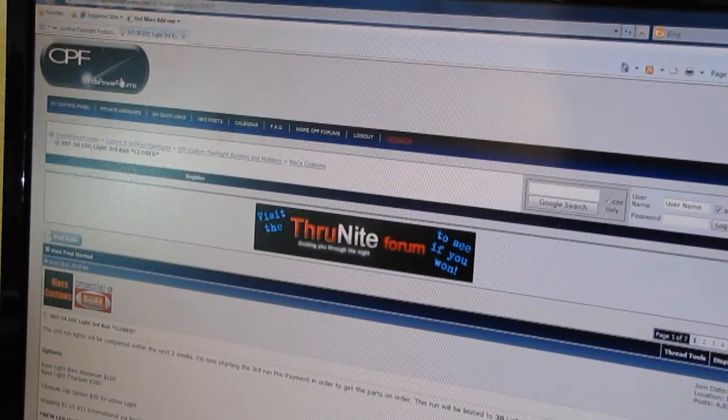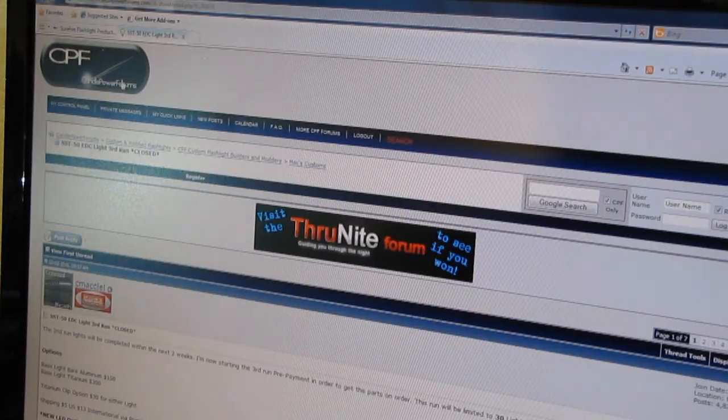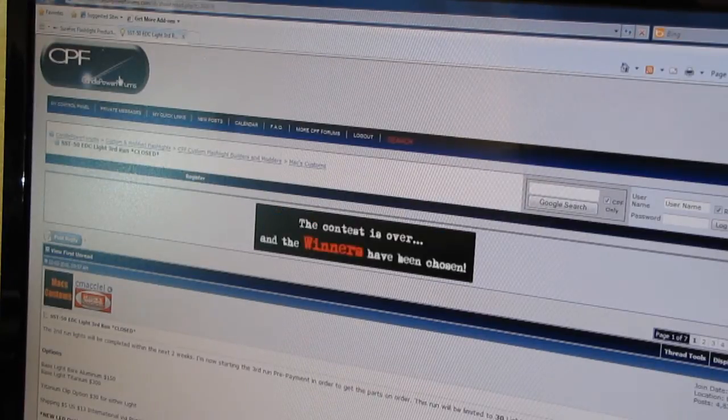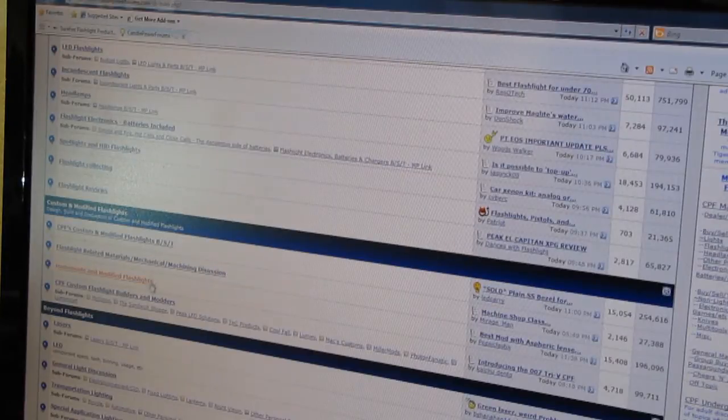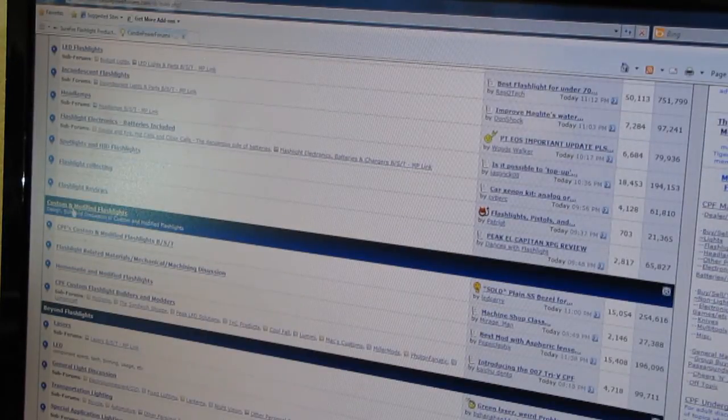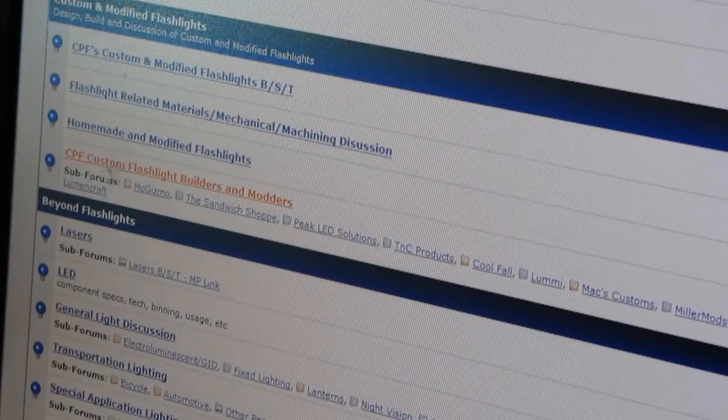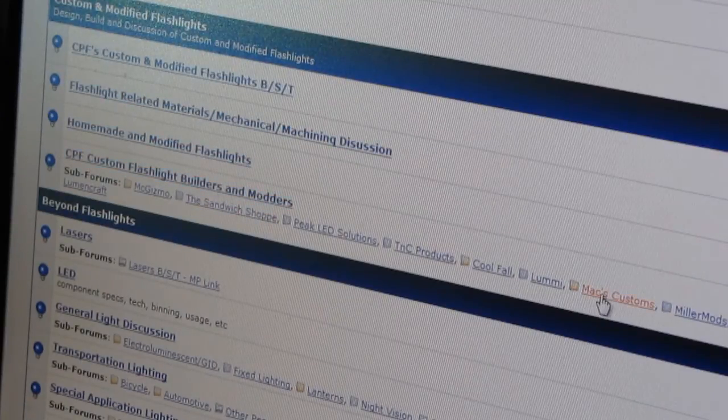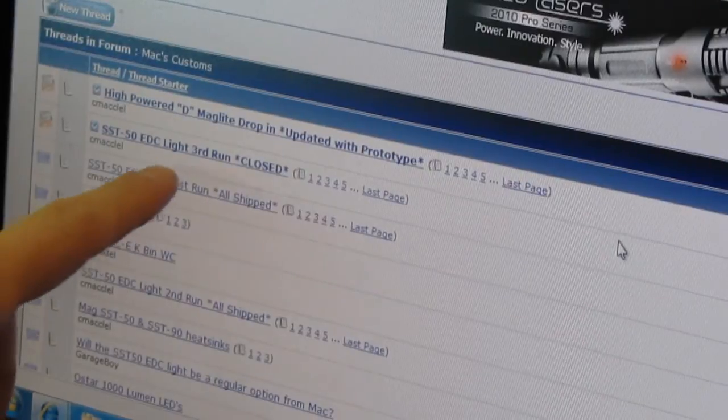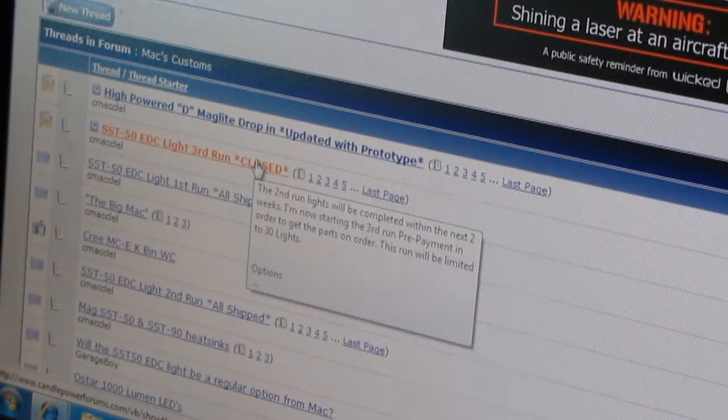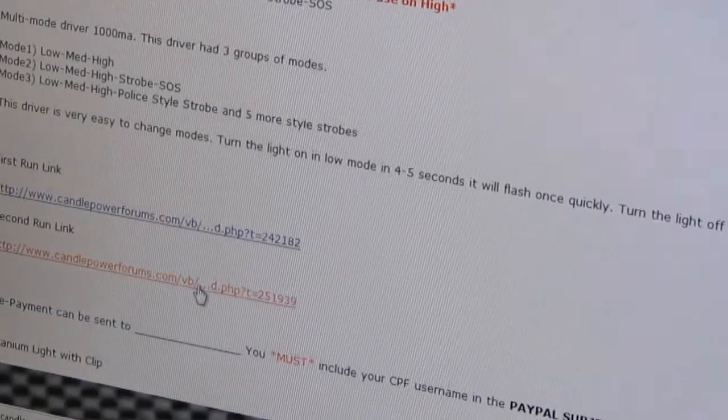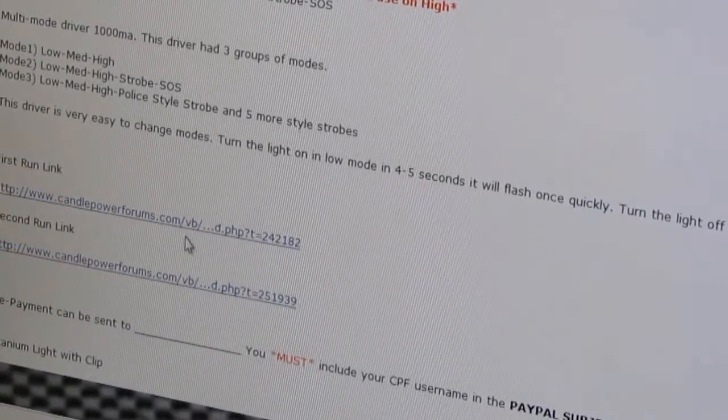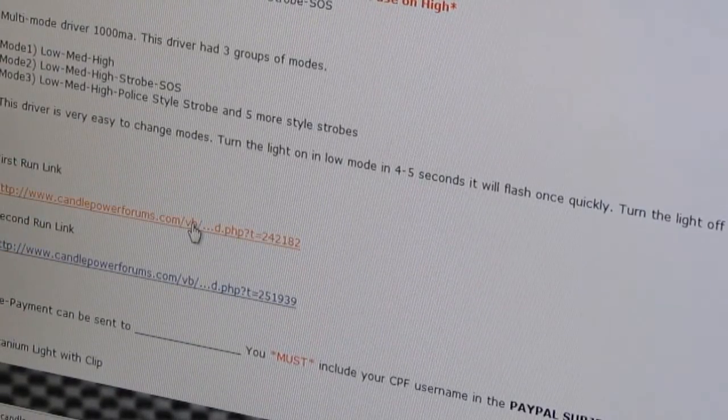Okay guys, just wanted to show you quickly, I'll probably post a link as well to MAC's subforum here. But what you want to do is go to the Candle Power Forum's main page and scroll down the front here until you get to Custom and Modified Lights. And go down to the CPF Custom Flashlight Builders and Modders. Go over to MAC's Customs, click on MAC's Customs. You can see here the third run, which is closed, as well as the first and second run. But if you want to go find out what the story on this light is, go in there and you'll see links for the first run and the second run. Click on those and you'll have more information than you can deal with.